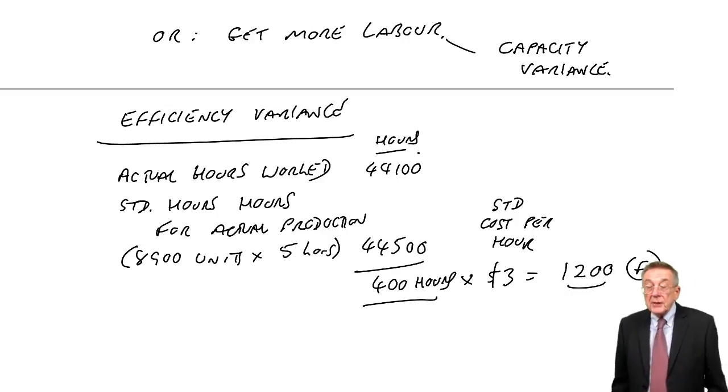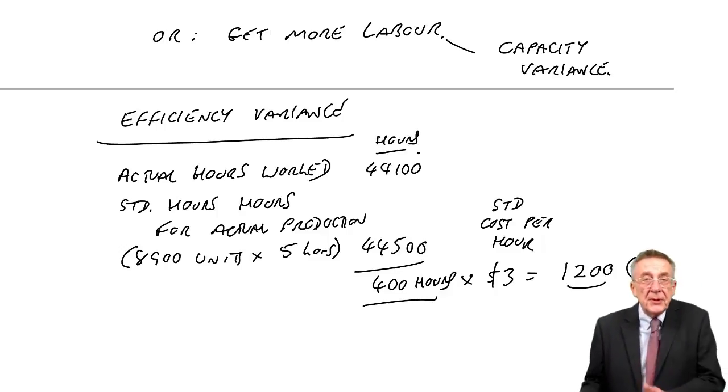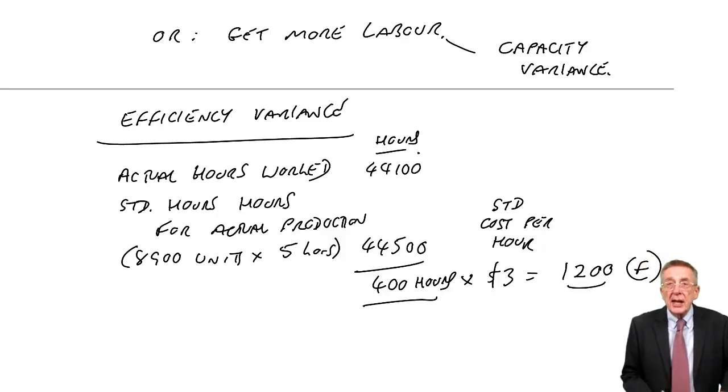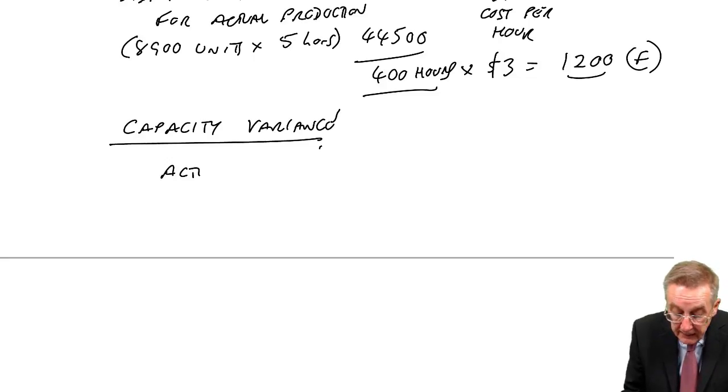The other one, though, was capacity. Did we get more labour or less labour than we budgeted on? If we get more labour, we can produce more. If we get less labour, we can produce less. And so, for capacity variance, we say, how much labour did we get? The actual hours worked? 44,100, I should remember it by now.